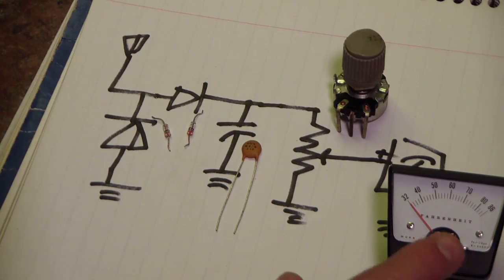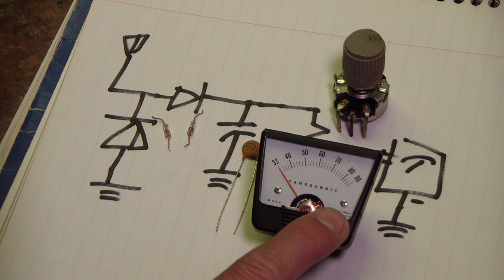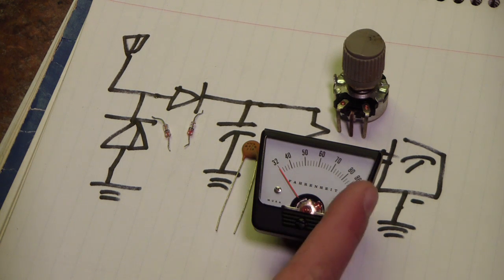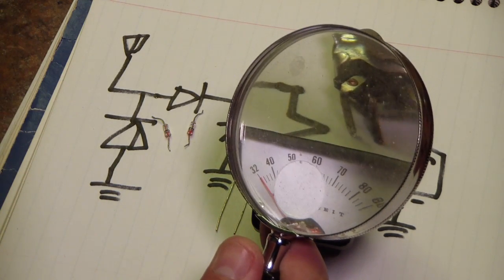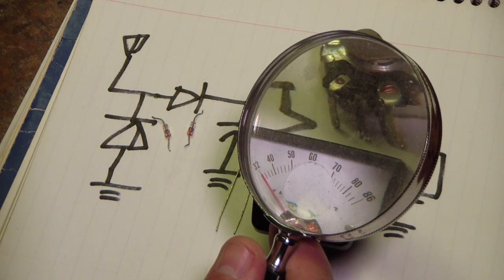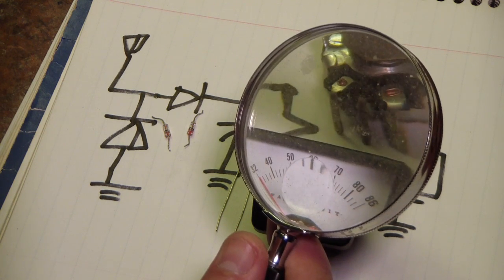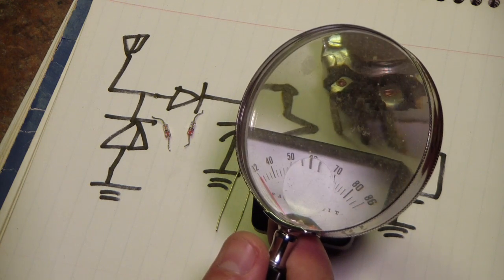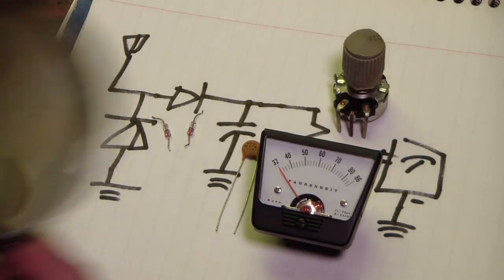So, a note on meter movements. Down here in the lower right corner, most meter movements will have their specifications printed. They'll have the resistance of their coil printed and they'll have the amount of current it requires to make a full scale deflection on the meter. This particular meter is 2.3k ohm resistance, and it takes 50 microamps for a full scale deflection.